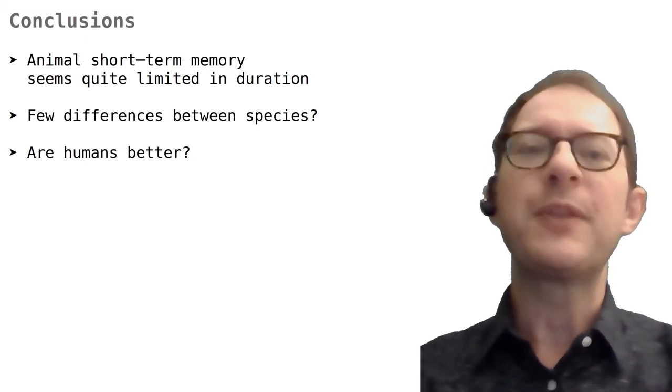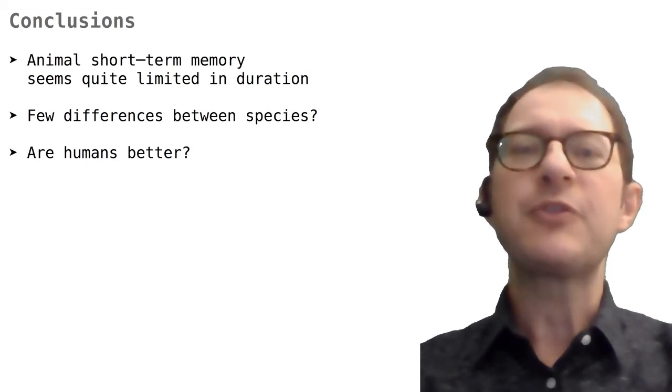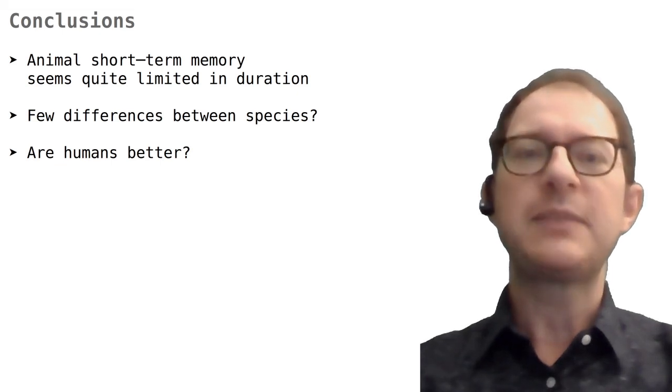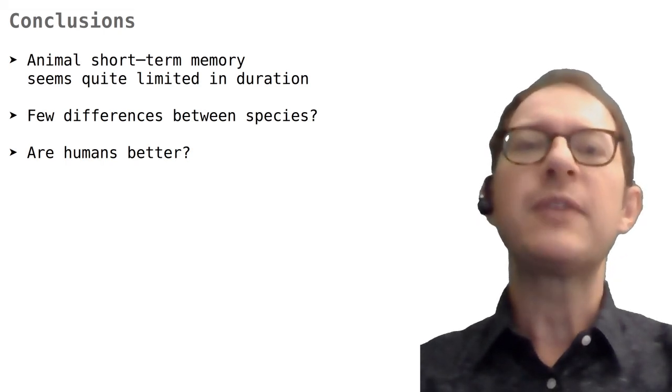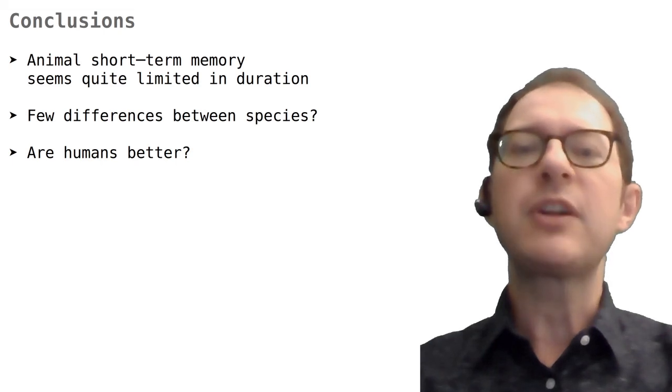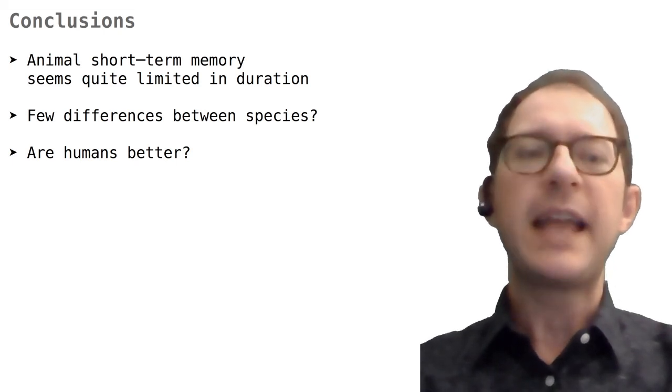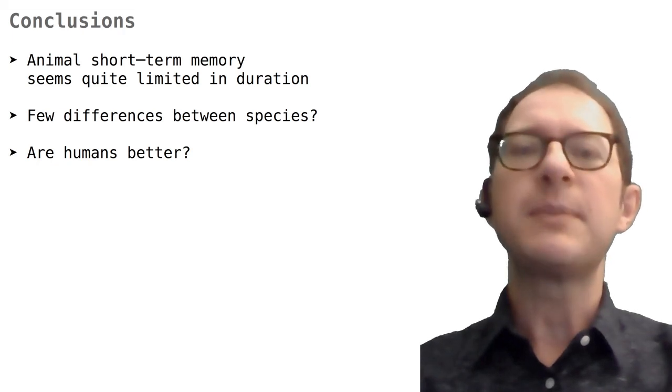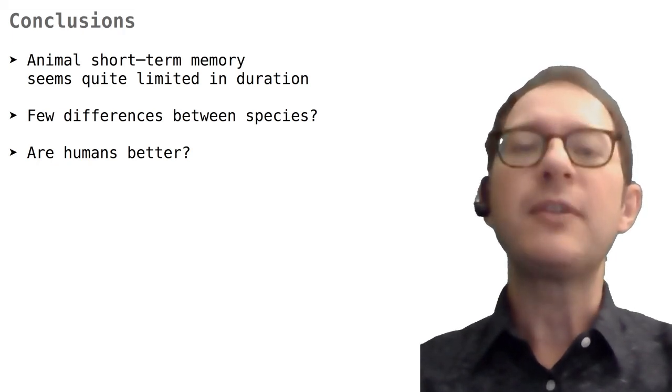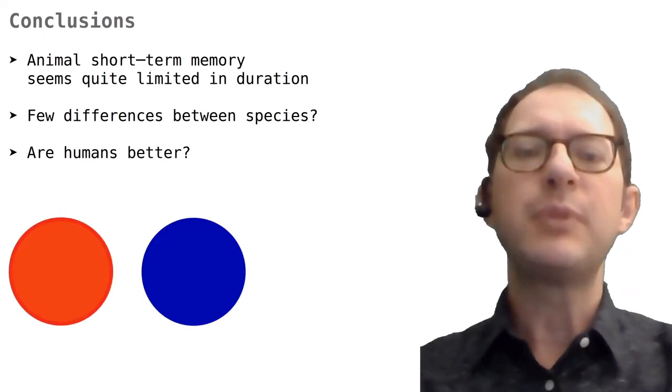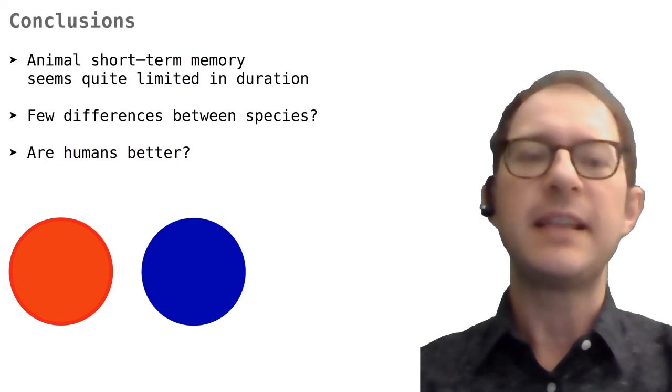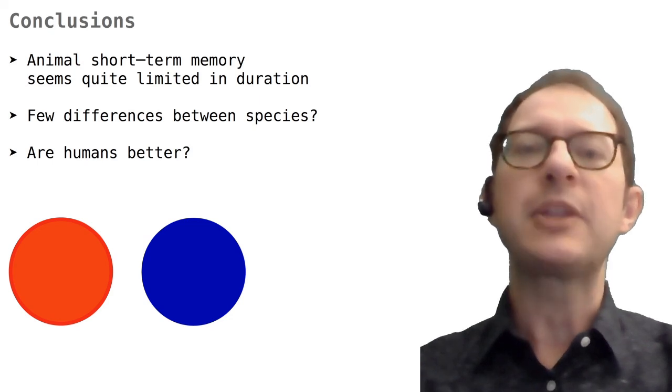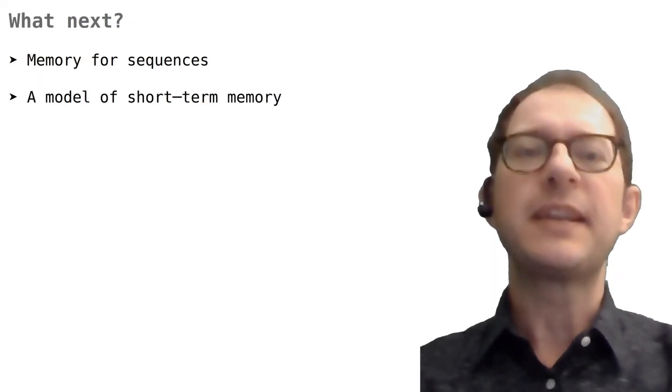At this point, you may wonder whether humans are any better. How is our short-term memory? There are DMTS studies with humans, and generally they show that we can remember things for many hours or even days. But I'll let you judge by yourself. At the beginning of this lesson, I showed a colored circle on screen for a second. I never talked about it, and you might have wondered what it was about. Now, do you remember the color of that circle? Was it red or blue? If you remember, you just did much better than any non-human animal ever tested, and without any training or knowledge that you would be asked about that color. This lesson is over. Here are some suggestions on what to study next. Happy learning to everyone!